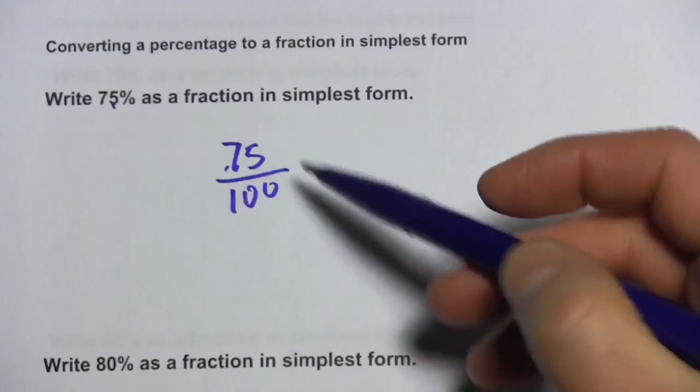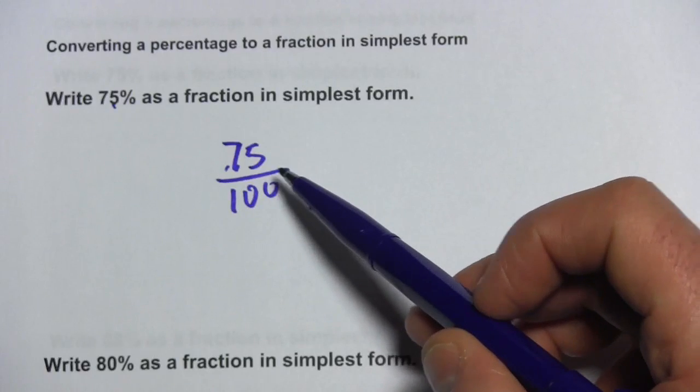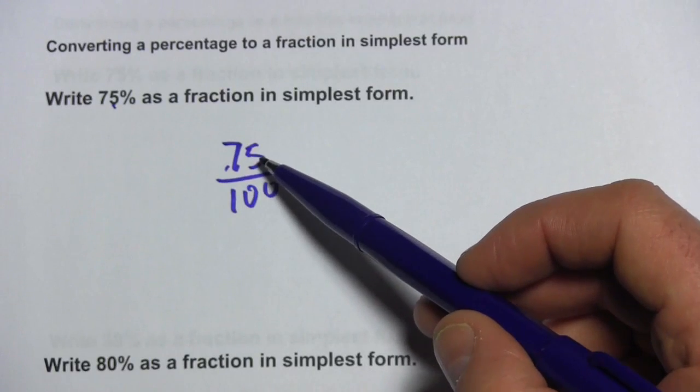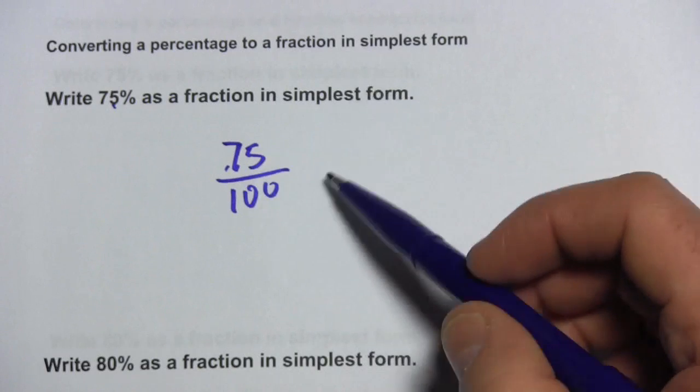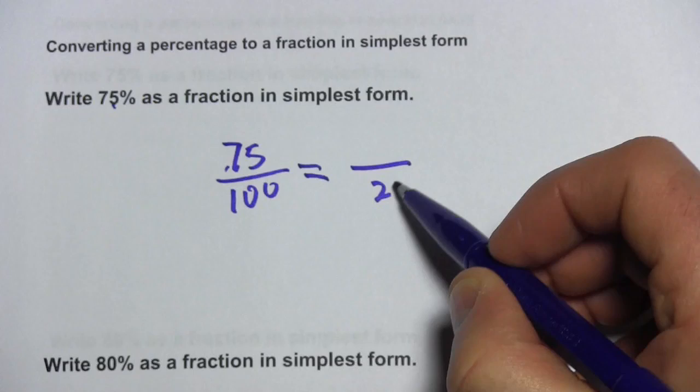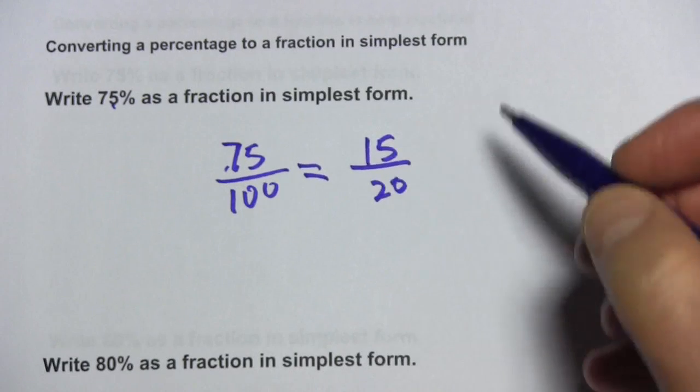This means that 75% is 75 out of 100. We're not done though, even though we have a fraction, because this can be reduced. I've got 75 on top, 100 on the bottom, both of those are divisible by 5 for sure. So 100 divided by 5 is 20 and 75 divided by 5 is 15.